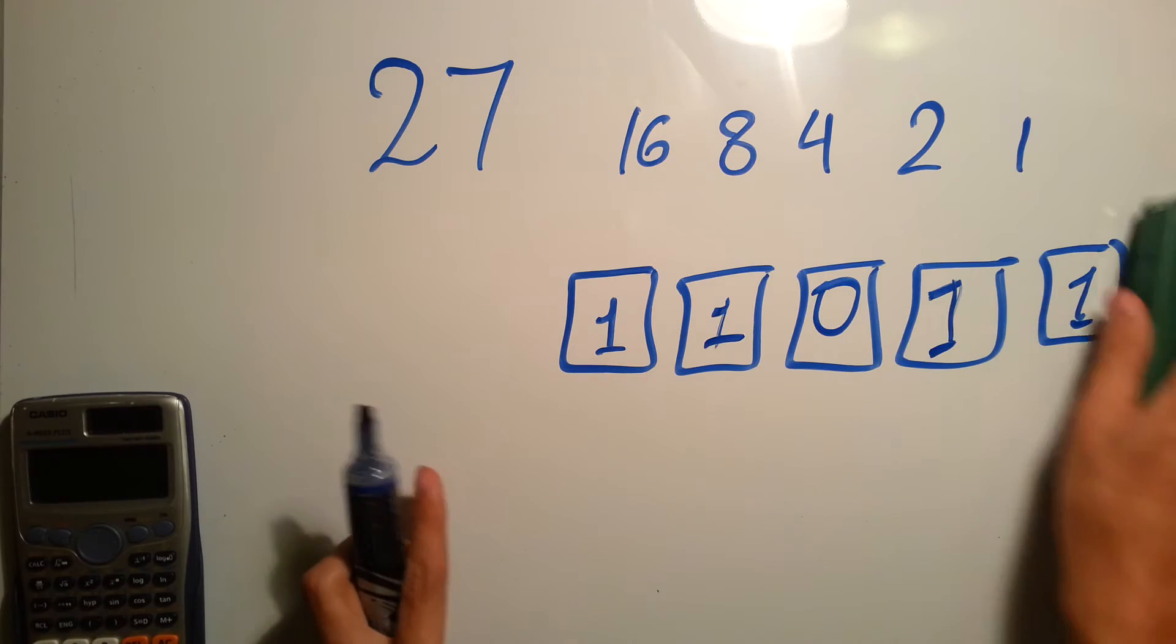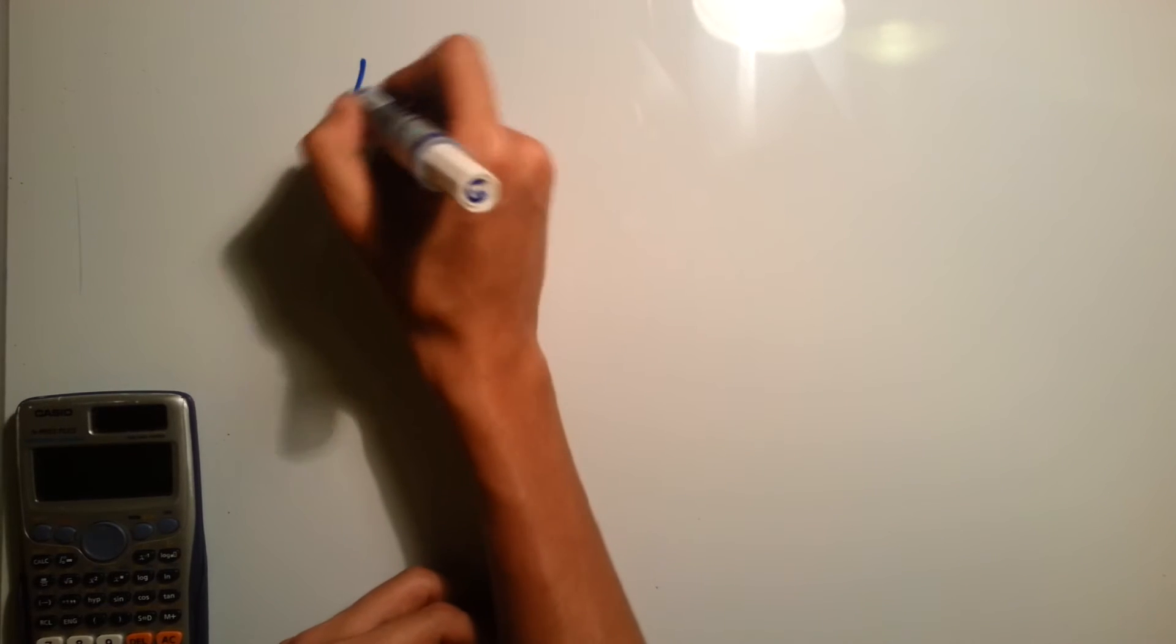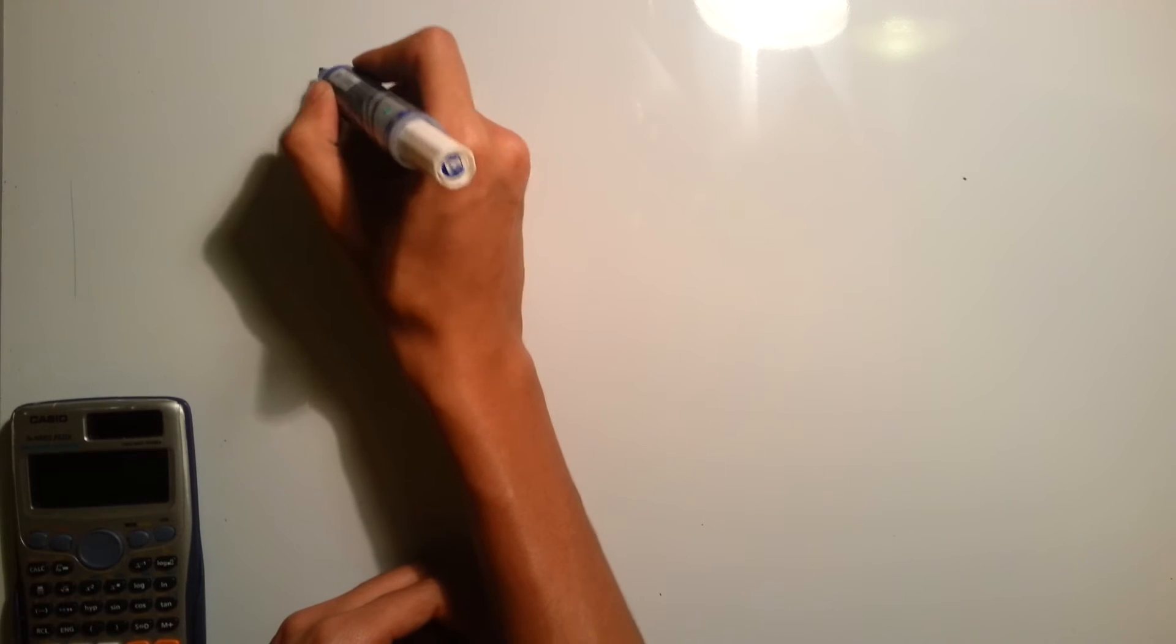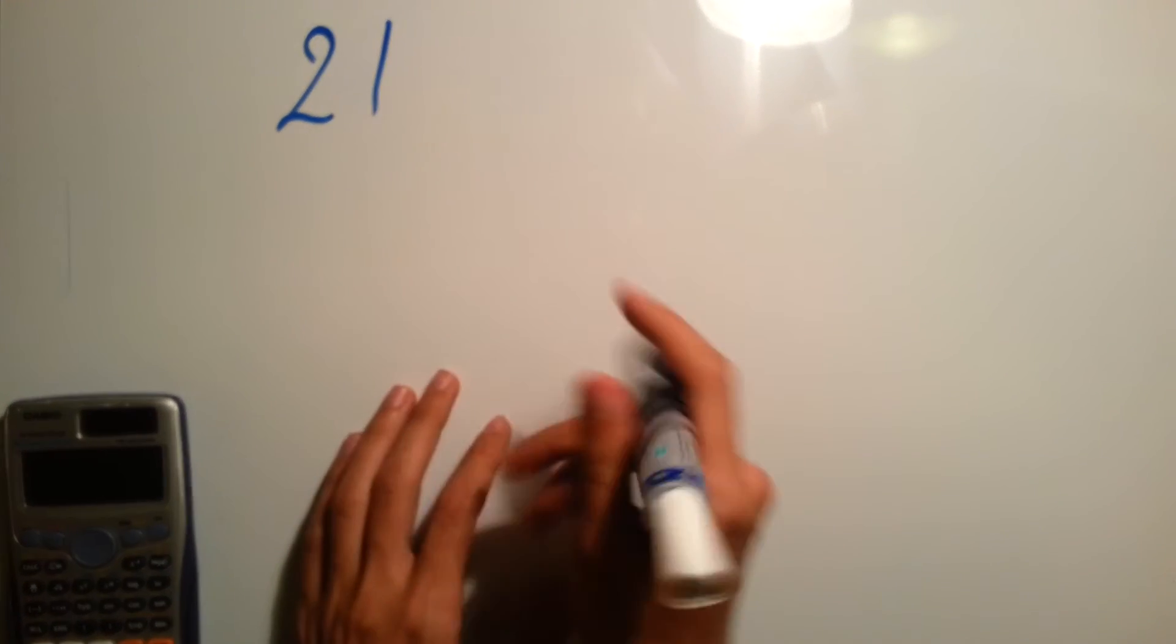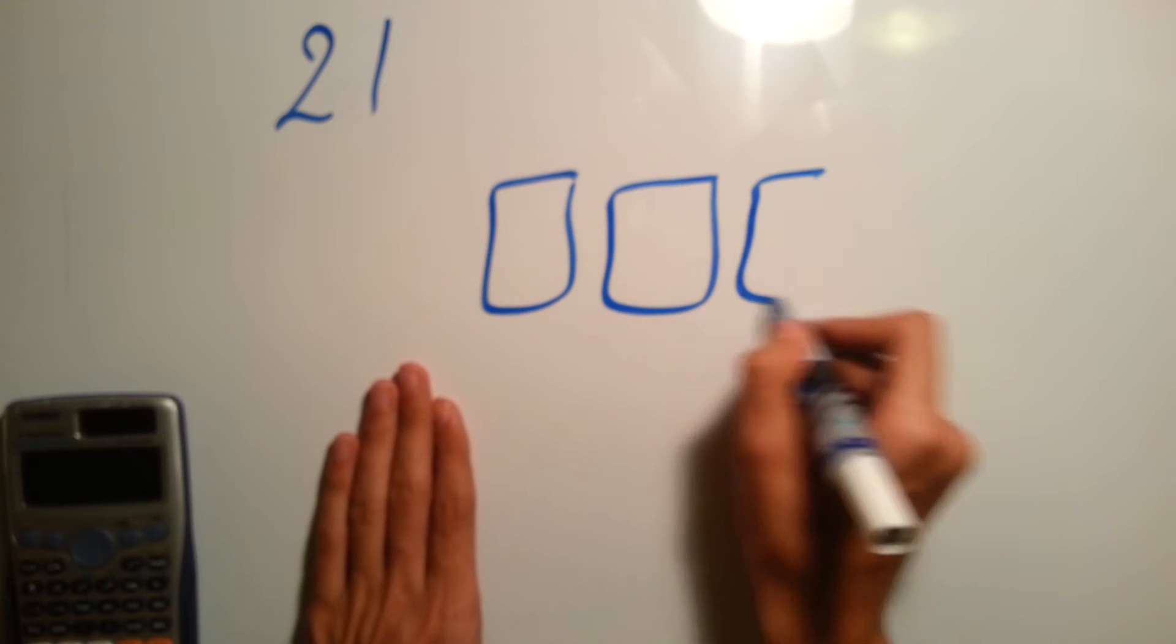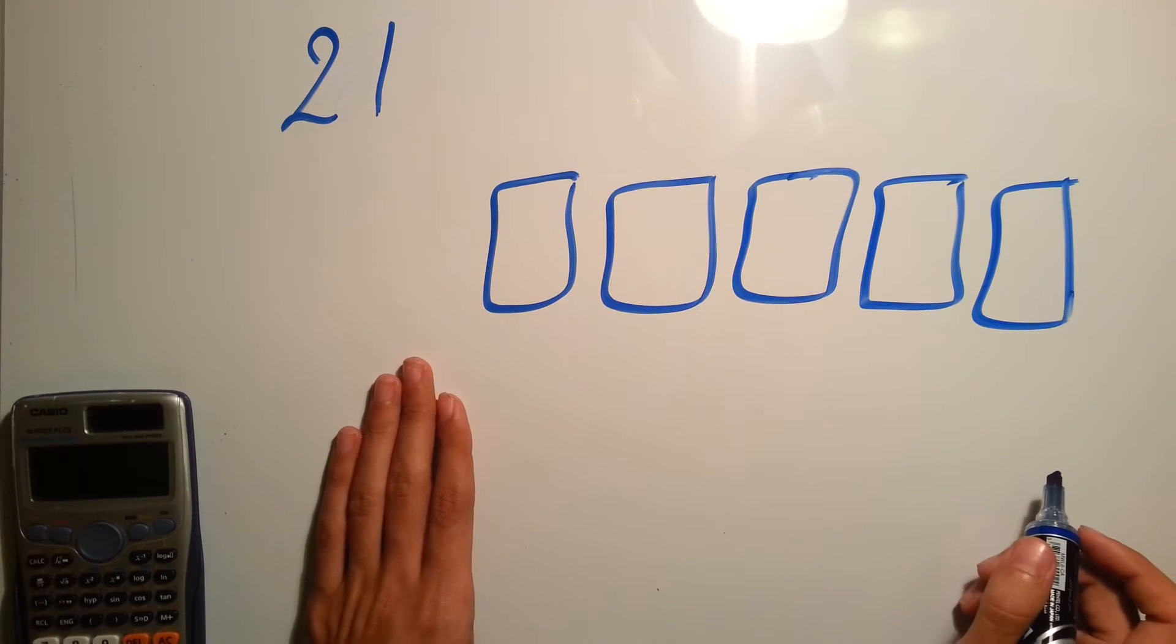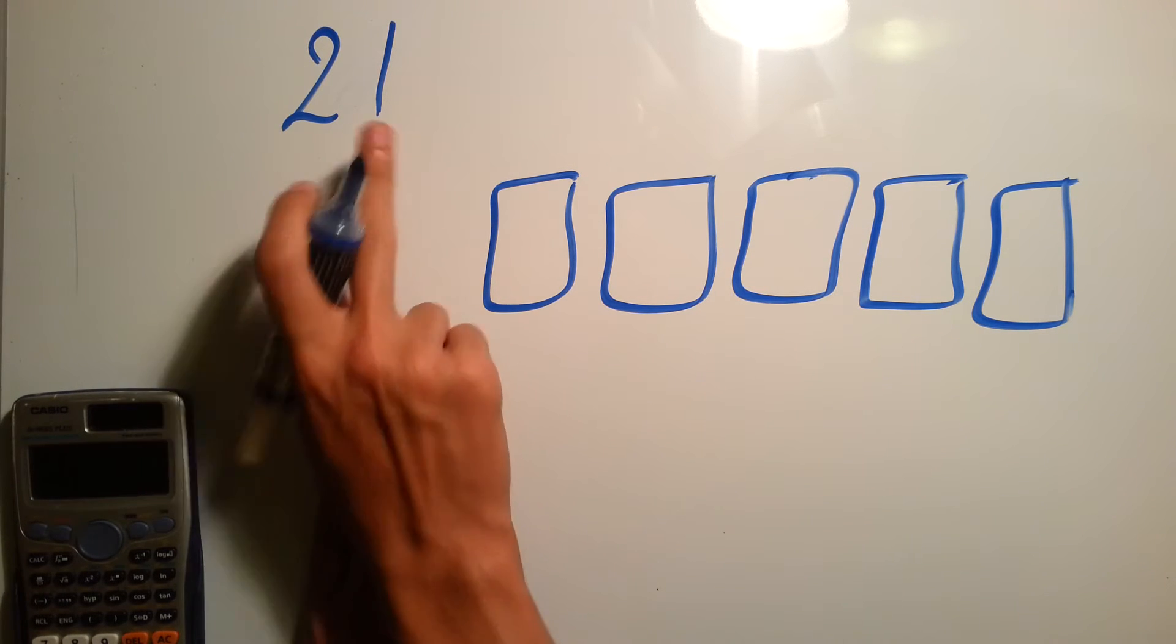Let's change the number. Another example, let's say you have 21. I have a friend who loves the number 21. Okay, so you know that you already know in your mind that you will end up having five digits, and you already know that you have 1 here.